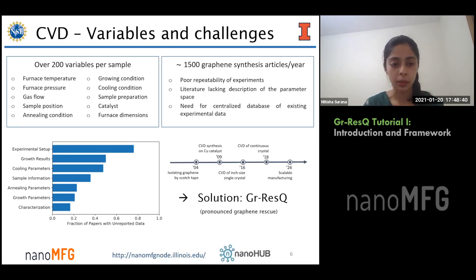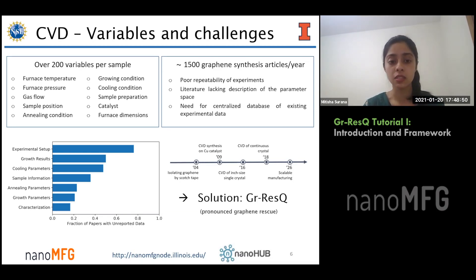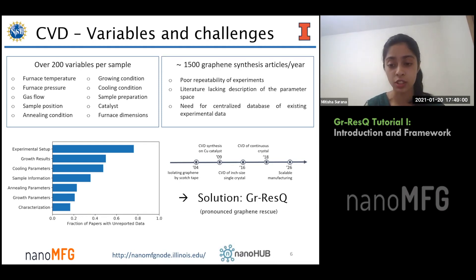Analysis of many papers found that experimental setup information is usually unreported, which is a very important part of the synthesis process. If we wish to have scalable manufacturing by 2026, we need to move towards a more data-driven analysis. This is where Graphene Rescue comes into play.